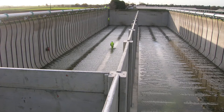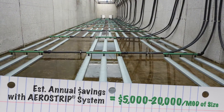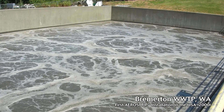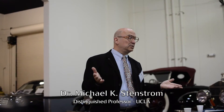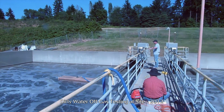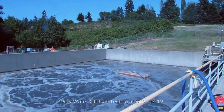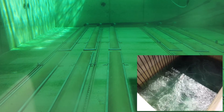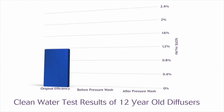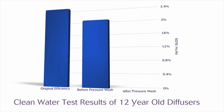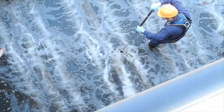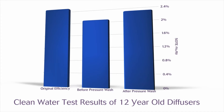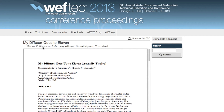In real-world terms, this can mean an annual savings to a wastewater treatment plant of between $5,000 to $20,000 per MGD of size. In 2012, these claims were put to the test when Dr. Michael Stenstrom of UCLA was invited to test 12-year-old Aerostrip diffusers, still fitted with the original membranes, at the first U.S. Aerostrip installation. Besides being the oldest fine pore diffusers he had ever tested, they were also observed to be some of the most efficient. The results indicated they were operating at 80% of the original factory-fresh efficiency. After a simple field pressure washing technique that took three to four hours, the diffusers were tested again and found to be operating at 90% of their original efficiency. His findings were presented at the 2013 WEFTEC convention in Chicago, Illinois.